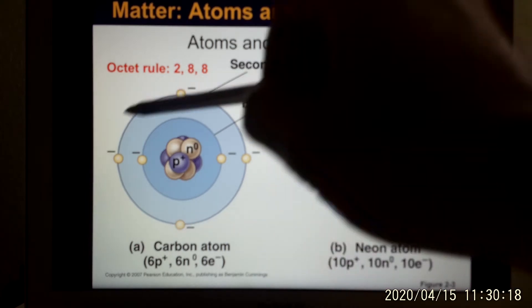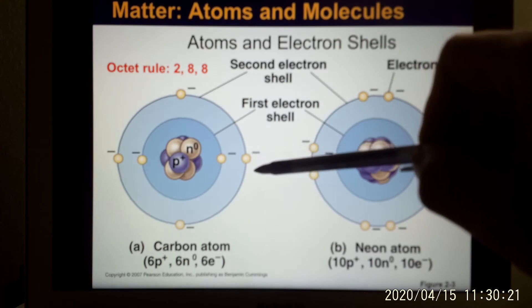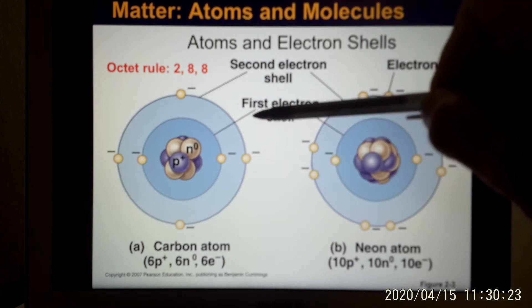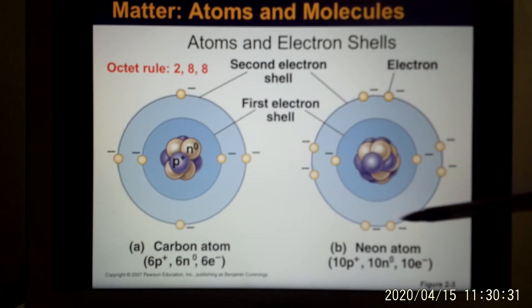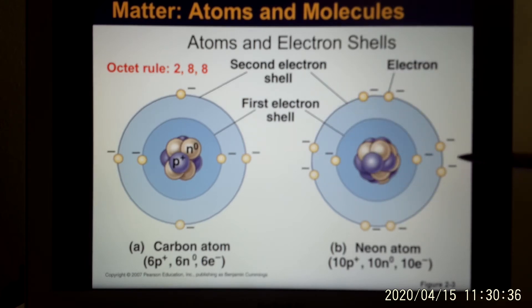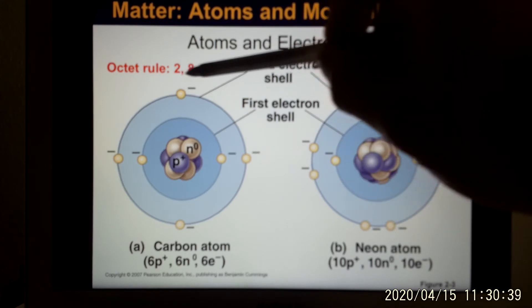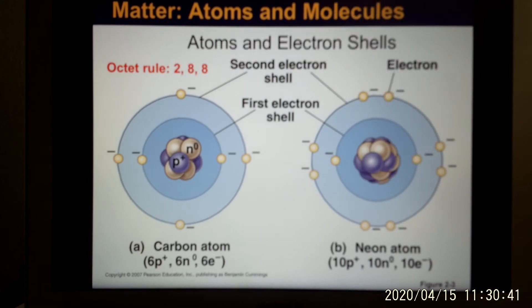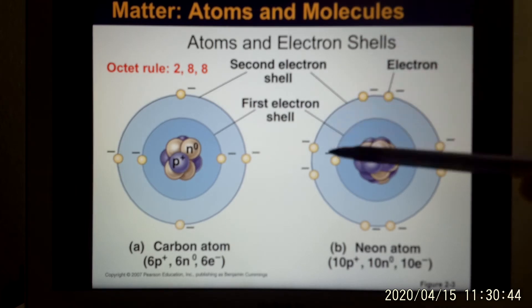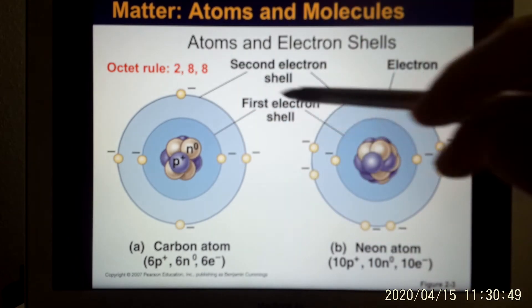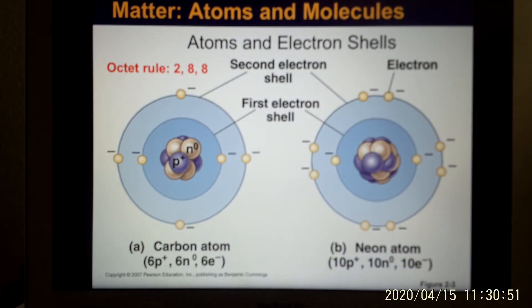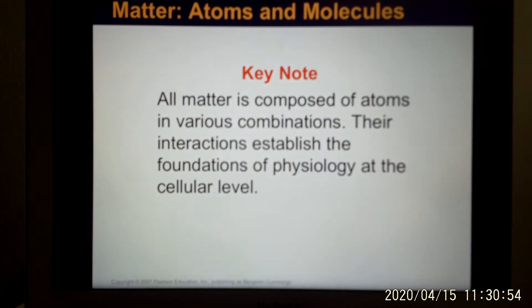Like carbon — its outer shell has 4 electrons, so it needs to find another 4 to make it happy. So it will have chemical interaction with other atoms. Neon is a noble gas; its outer shell is 8, so neon is very stable — it is very happy by itself because the outer shell is full. Every atom needs to follow this rule, and most of them have an outer shell that's not 8, so they have to have chemical interaction with other atoms — and that's when the chemical bond happens.